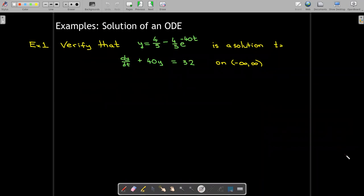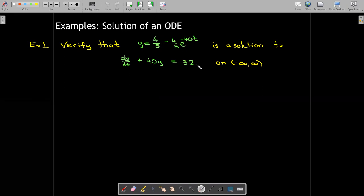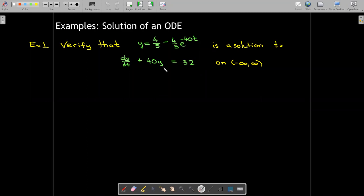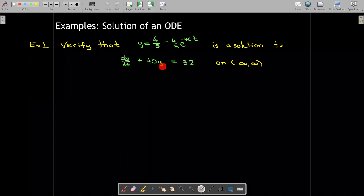An example. We're told that y equals four-fifths minus four-fifths e raised to the power of negative 40t is a solution to the differential equation dy by dt plus 40y equals 32. And we want to verify that. The way we want to do that is substitute the derivative of y plus 40 times y and see if that equals 32.